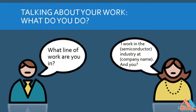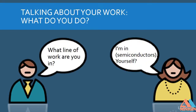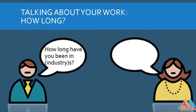Talking about your work begins with asking what the other person does. 'What do you do' is a little direct, so we usually say, 'What line of work are you in?' 'Oh, I work in the semiconductor industry at Samsung. And you?' Or: 'I work in electronics.' 'I work in the computer industry. And you?' Another way to respond is: 'I'm in semiconductors.' 'I'm in computers.' 'I'm in education. Yourself?'